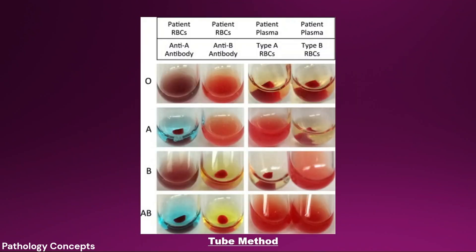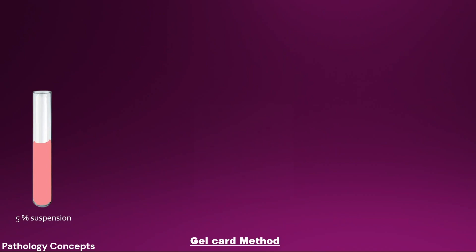This is the actual photo showing agglutination of RBCs in the tube method. Now let's understand the gel card method. First, prepare the 5% suspension as we prepared for the tube method. From this 5% suspension, add 10 microliters of the blood into the A column, B column, D column, and control column.